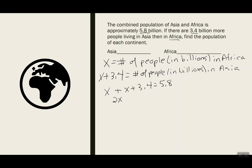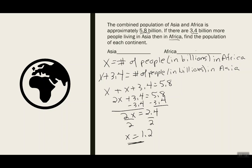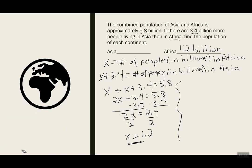x and x are like terms, so I can add them — that gives me 2x. Then I want to subtract the 3.4 from both sides, so now 2x is equal to 2.4. Divide by 2, and now I know x is 1.2. Remember, x was defined as the number of people living in Africa. So Africa has 1.2 billion people. Then to find the number of people in Asia, we're going to take 1.2 and add it to 3.4, which gives me 4.6. So Asia has a population of about 4.6 billion.